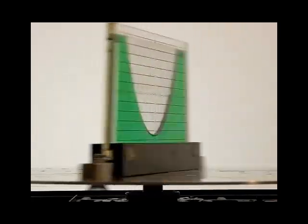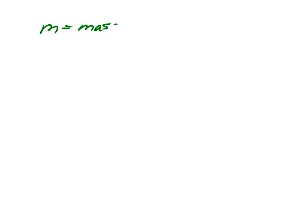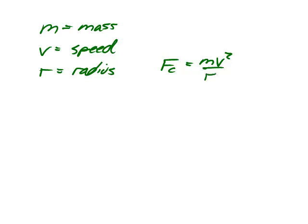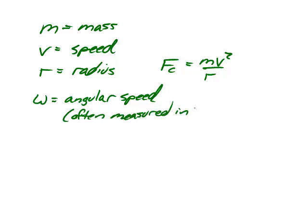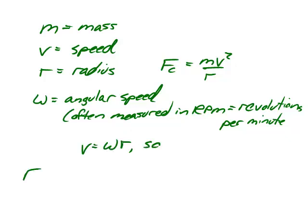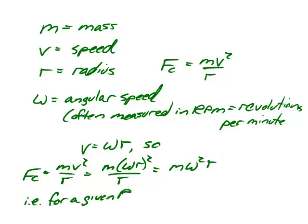How strong the centripetal force needs to be depends on three things: the mass of the object — more massive things require more force; the speed of the object — the faster it's moving, the harder the pull has to be; and the radius of the circle — for a given speed, smaller radii require stronger forces, it's harder to make a tighter turn. But for a given angular speed, say in revolutions per minute, larger radii require more force, because for a given RPM, larger radii have higher speeds.